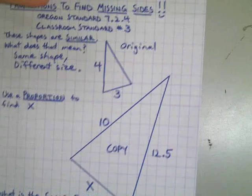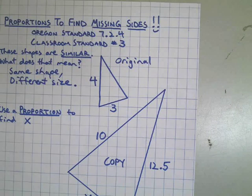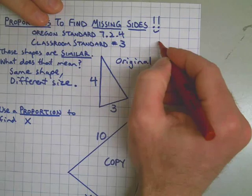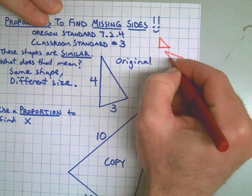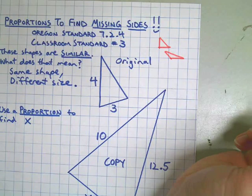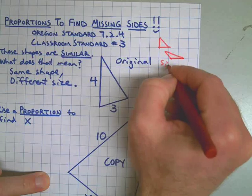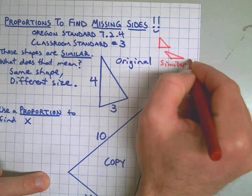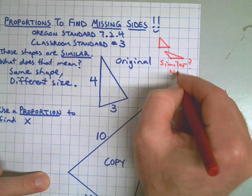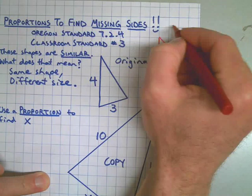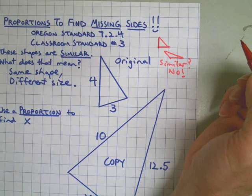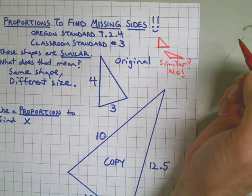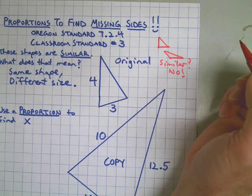Now on a little sidebar over here, I'm going to scoot over to the side. A common mistake when people are talking about similar would be something like this. If I have a right triangle and then let's say I have a little scalene triangle going on over here, some people might say that these are similar but they are not.